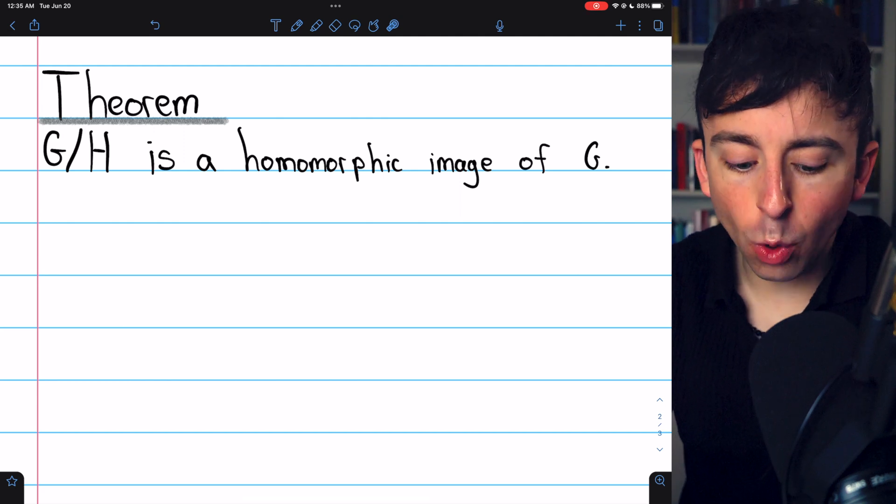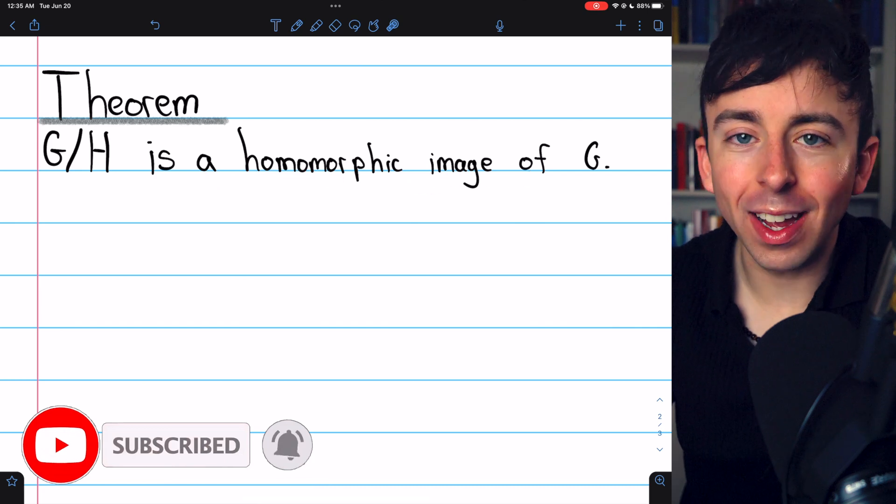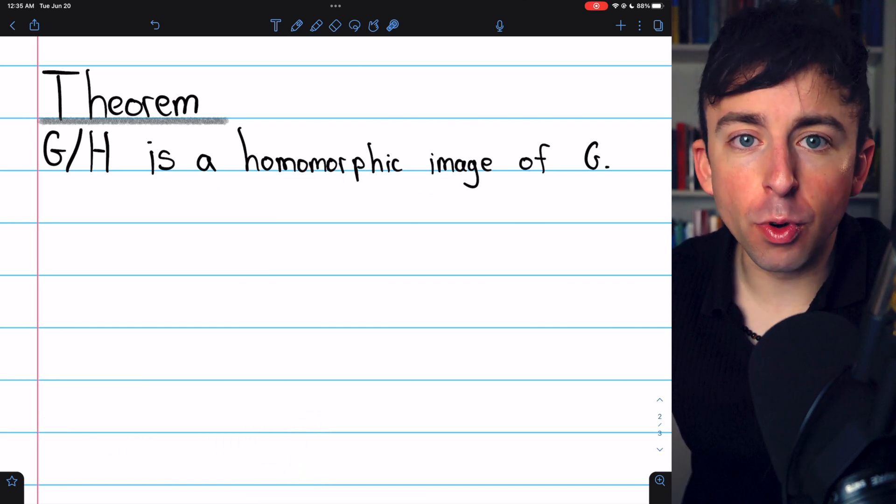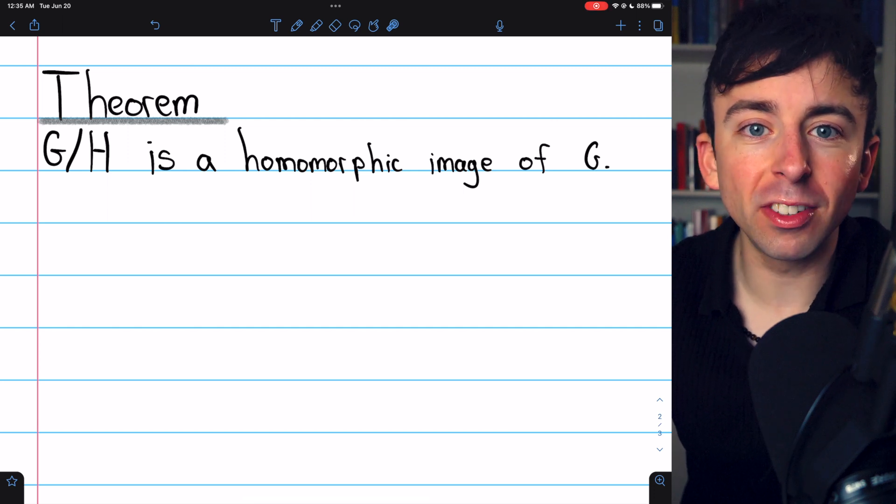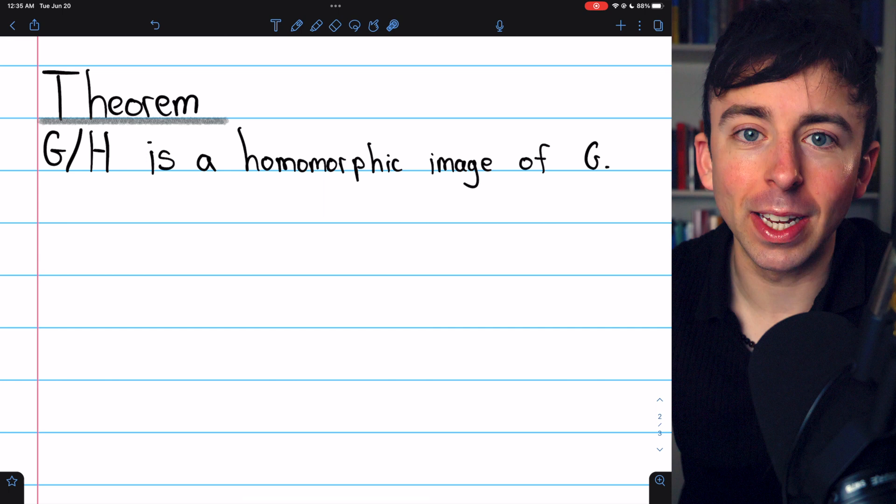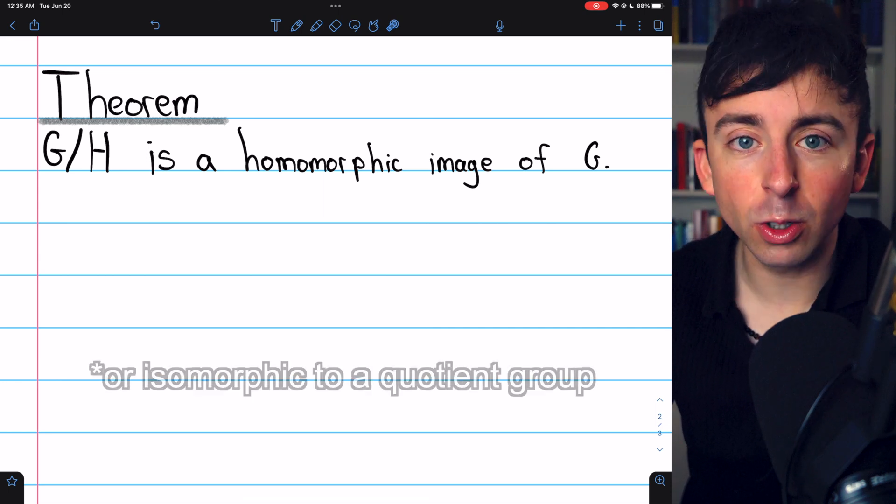We previously proved that any quotient group of a group G is a homomorphic image of G, which means we're getting very close to proving the fundamental homomorphism theorem, which is the converse of this statement, that every homomorphic image of a group is in fact a quotient group.